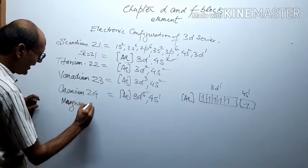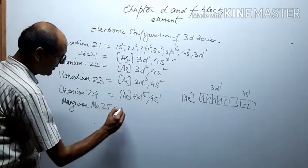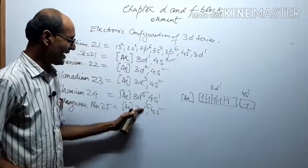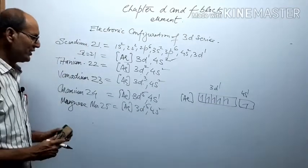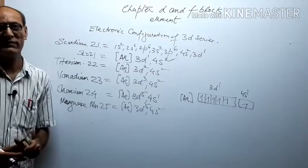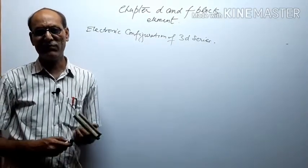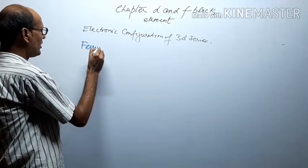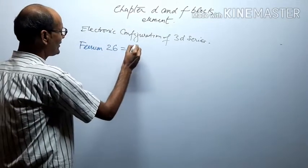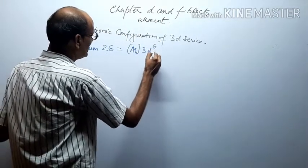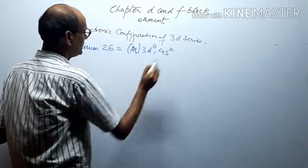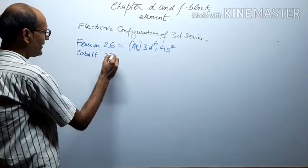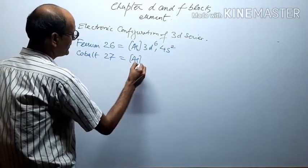Manganese (Mn, symbol Mn, atomic number 25): configuration [Ar] 3d⁵ 4s² — contains five unpaired electrons, is a transition element and a 3d element. Iron (Fe, also called ferrum, atomic number 26): electronic configuration [Ar] 3d⁶ 4s².